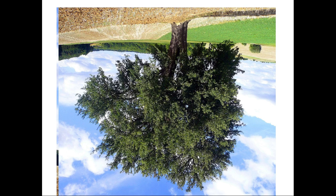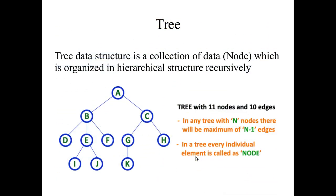We call that the root node. From that there will be n number of branches, and from those branches there are sub-branches or sub-trees. I have given one small tree structure with 11 nodes. In general, a tree is a collection of nodes organized in a hierarchical structure recursively.